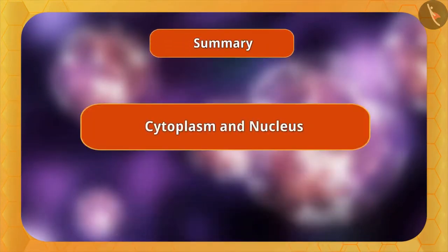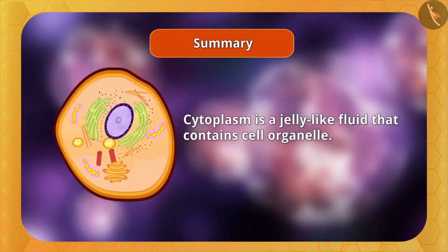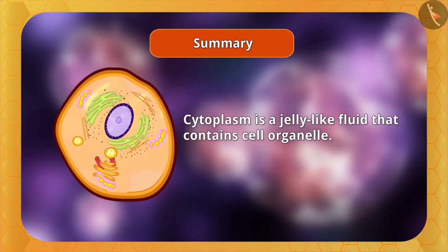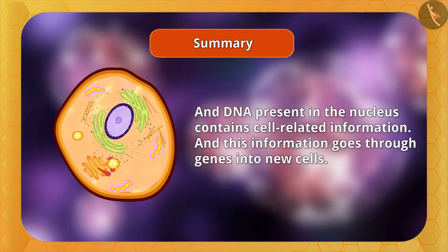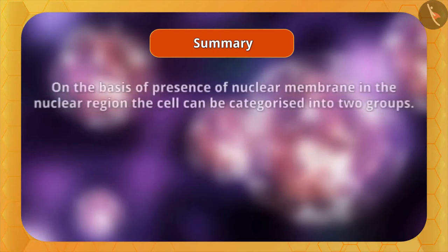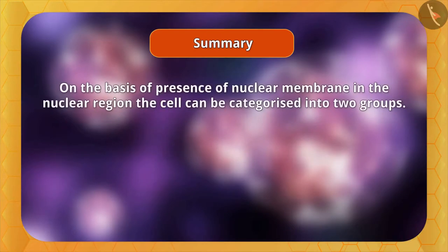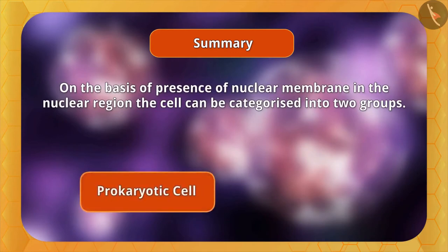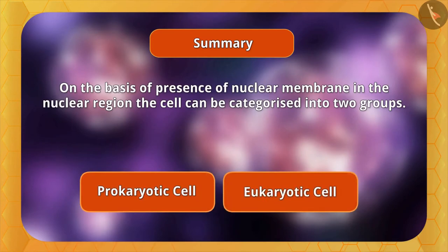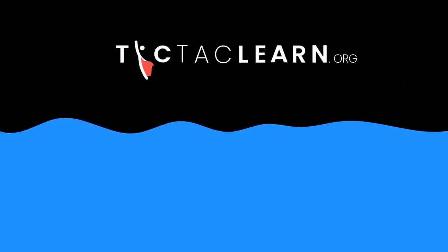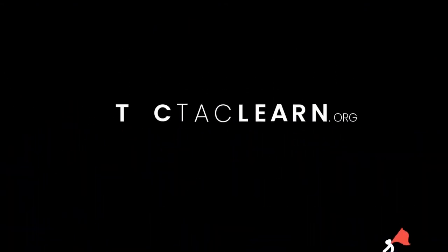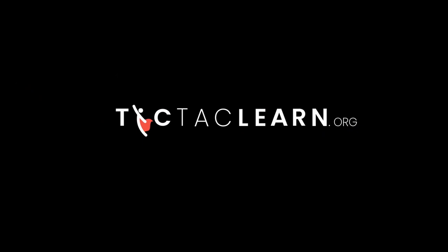Summary: In this video, we learned about cytoplasm and nucleus. Cytoplasm is a jelly-like fluid that contains cell organelles. DNA present in the nucleus contains cell-related information, and this information goes through genes into new cells. On the basis of the presence of a nuclear membrane, cells can be categorized into two groups: prokaryotic cells and eukaryotic cells. Next, we will learn about cell organelles.